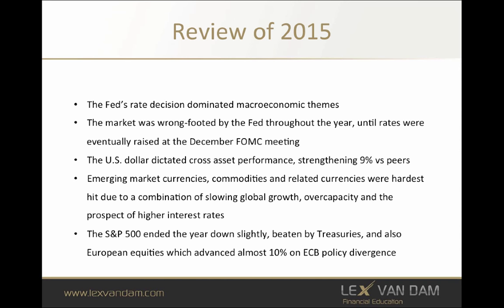In terms of performance across each of the markets and the various asset classes, it was very much dictated by a rising or strengthening dollar which finished the year up around 9% versus its peers on a trade-weighted basis, looking at the dollar index. Emerging market currencies, commodities, and also commodity-linked currencies like the Australian dollar, New Zealand dollar, and South African Rand were the hardest hit. It was a combination of slowing global growth — particularly in Asia — overcapacity coming from China and other emerging markets, and the main driver: the prospect of higher US interest rates kicking off a hiking cycle across other regions.